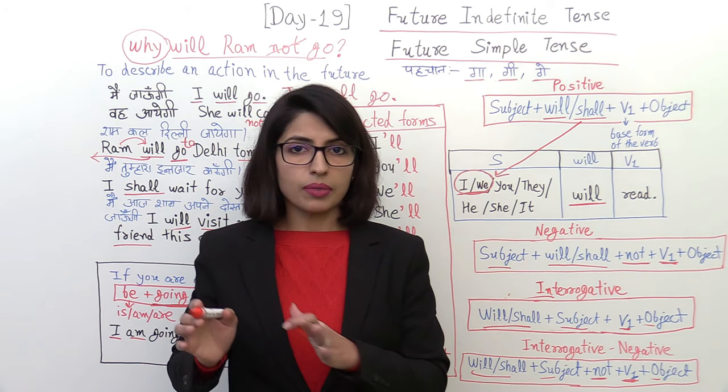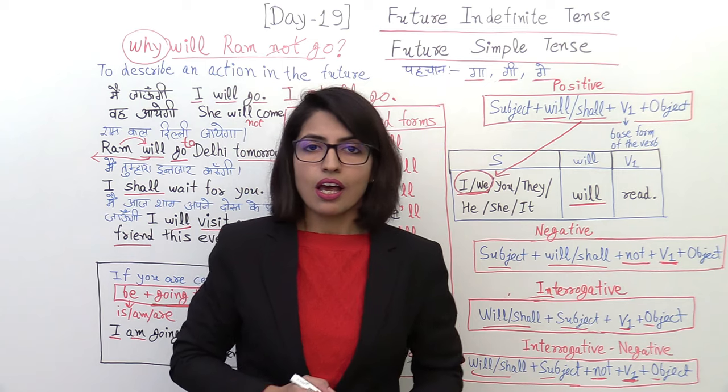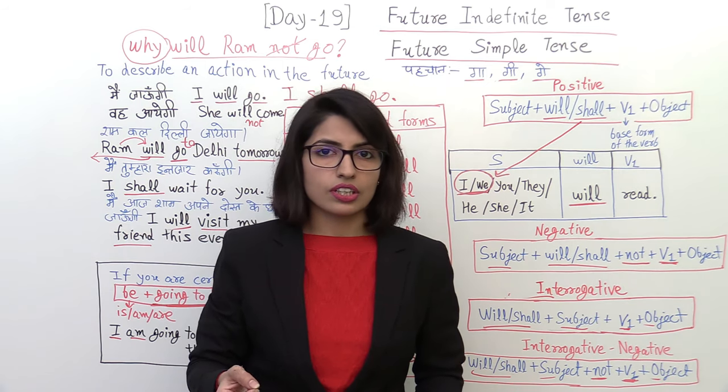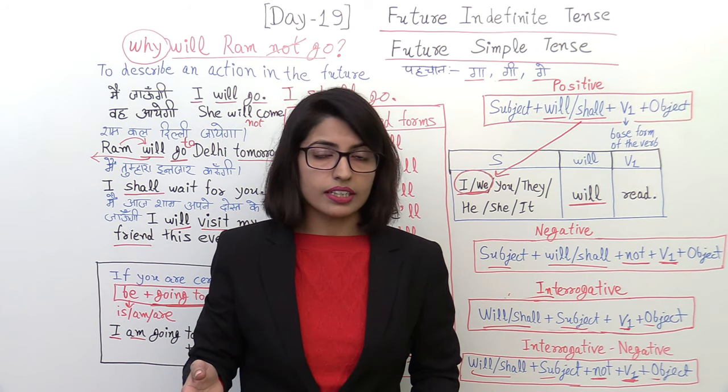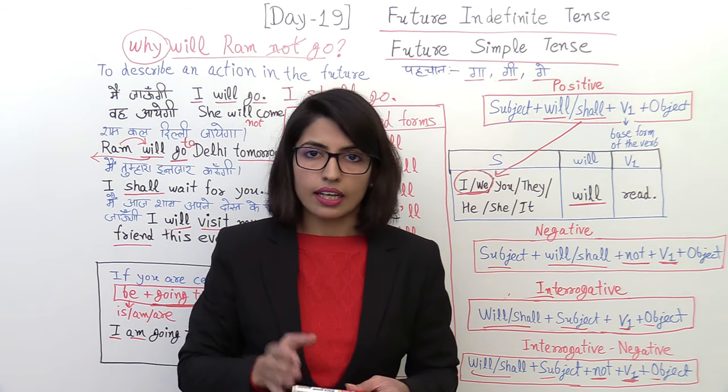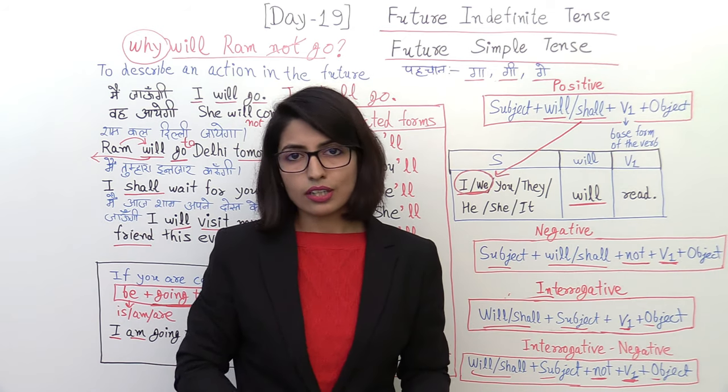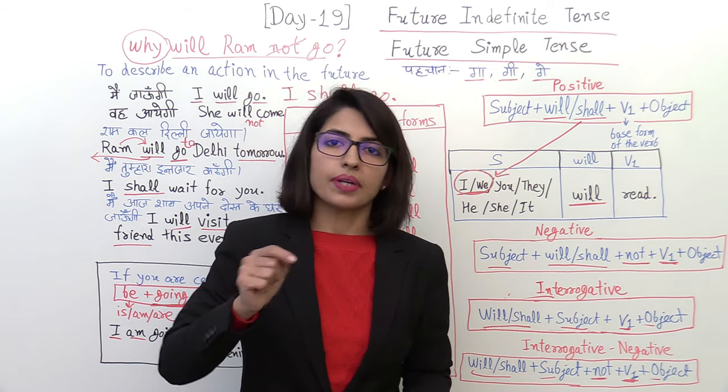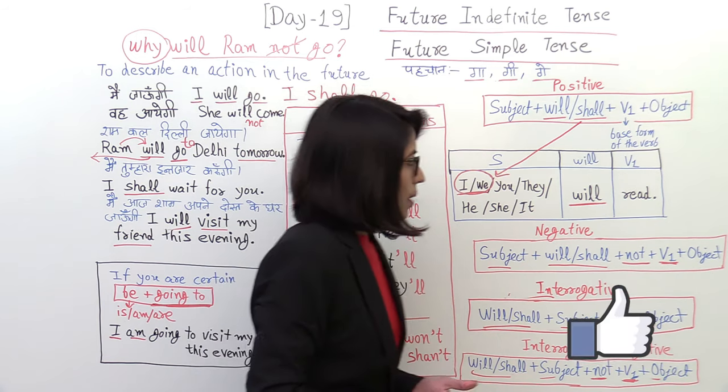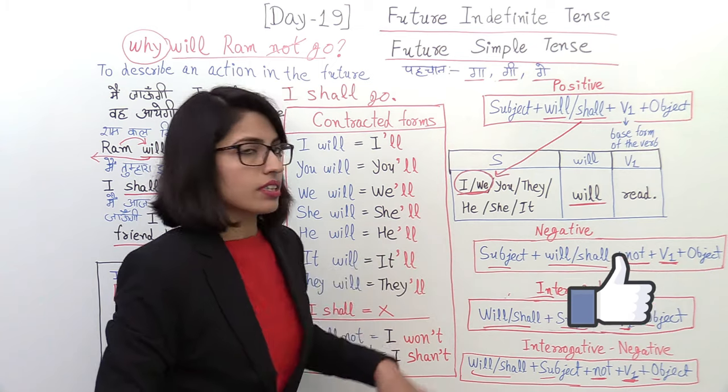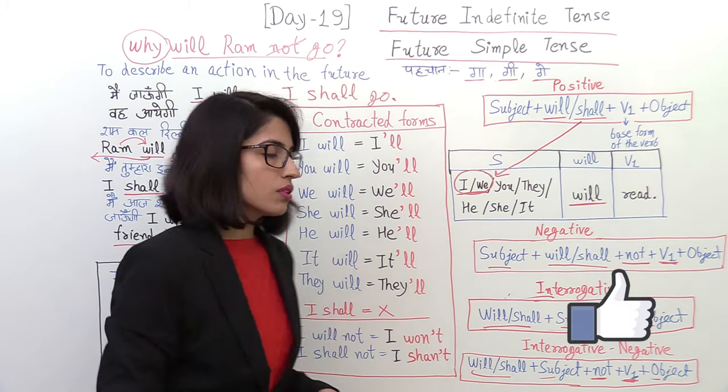Now you will understand one thing. You have seen that I have told the present indefinite, past indefinite, and future indefinite. The structure of these sentences - positive, negative, interrogative, interrogative negative - they are similar. The helping verb changes, but their positions are the same. So if you have understood this concept in one tense, then you will never be confused.